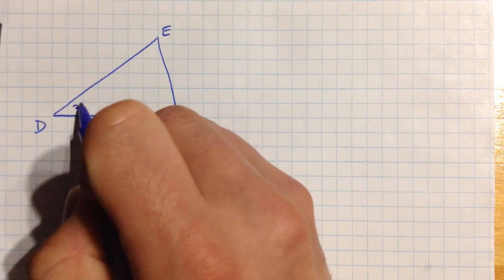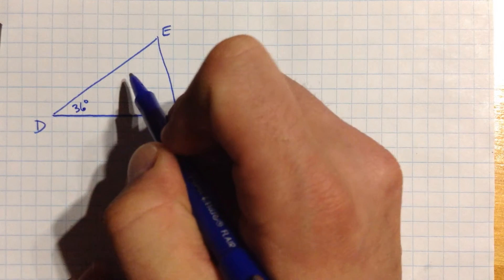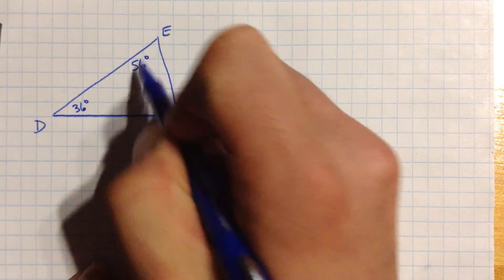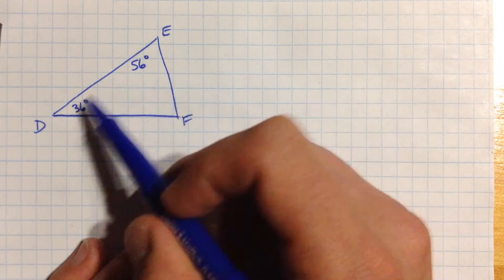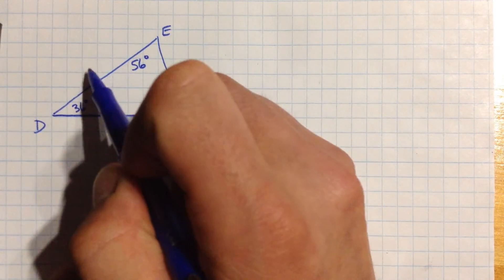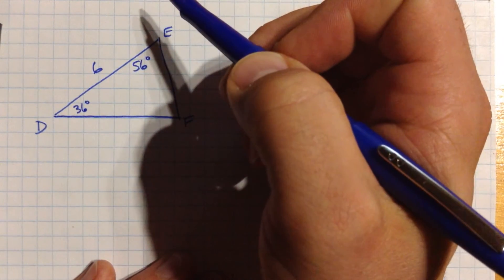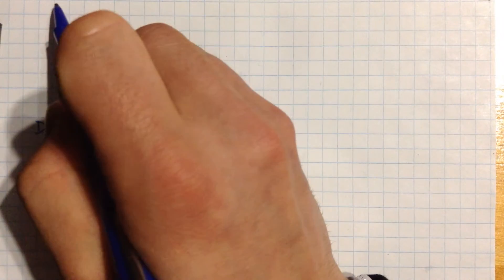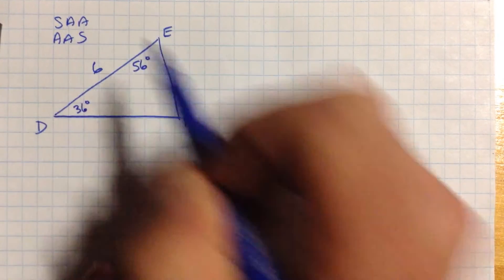So let's call this 36 degrees. And we'll call this one, let's say, 56 degrees. Let's call it that. And so I've got two angles, and I'm going to put a side in here as well. I'm actually going to put this side over here. Let's make this one 6. So this is angle, angle, side. Or you might say side, angle, angle, or angle, angle, side. Either way of saying that is fine.